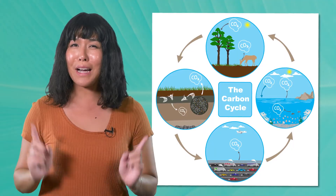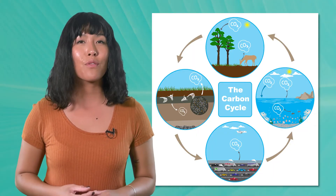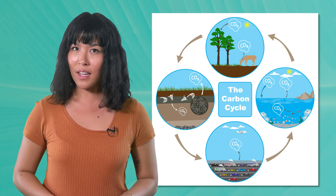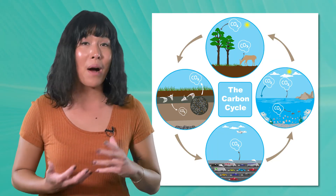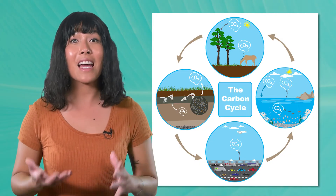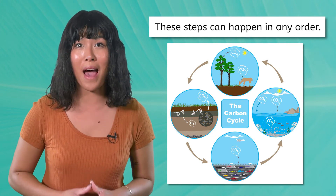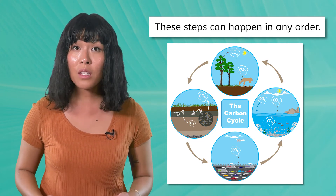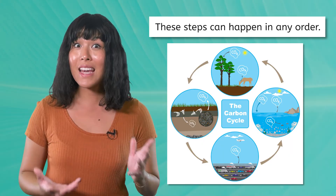We covered a lot today, but don't get overwhelmed by all of the steps in the carbon cycle — let's focus on the big picture. During this cycle, atmospheric carbon dioxide can change forms and move through the atmosphere, biosphere, geosphere, and hydrosphere. These steps can happen in any order, and we just explored one path. In environmental science, all of the spheres are related, so changing the balance in one area can have a big impact. Next time, we'll investigate another cycle that moves from the atmosphere to the biosphere: the nitrogen cycle.